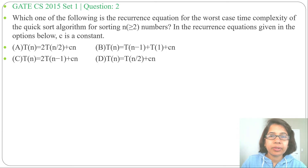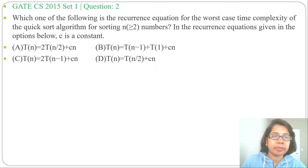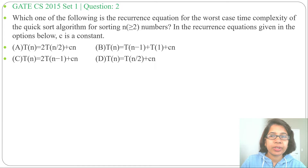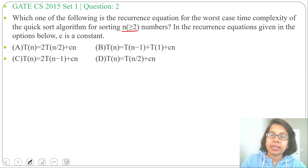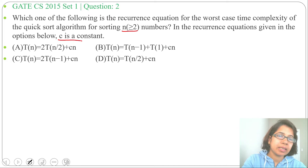Let's solve a previous question on QuickSort. This question was asked in GATE CH 2015, Set 1, Question Number 2: which one of the following is the recurrence equation for the worst case time complexity of the QuickSort algorithm for sorting n (greater than or equal to 2) numbers? In the recurrence equation given in the options, c is a constant.